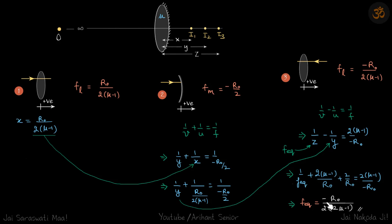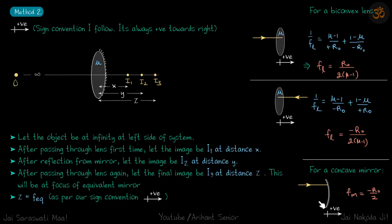Solving gives our answer, which comes out negative. That means f_equivalent is negative, so the focus is on the left side — which is expected for this concave mirror system. Step by step, that's how we get our answer.